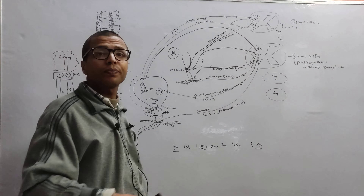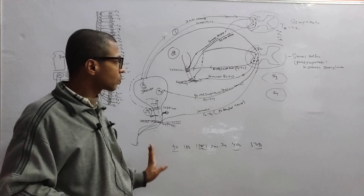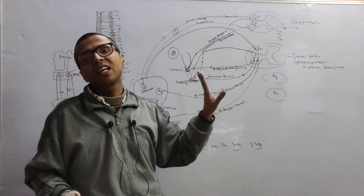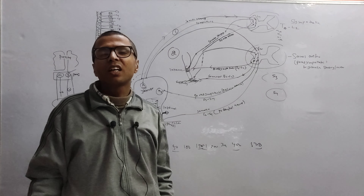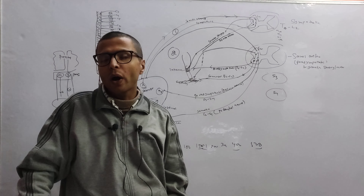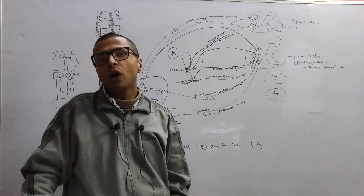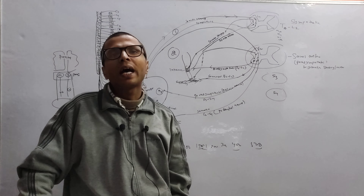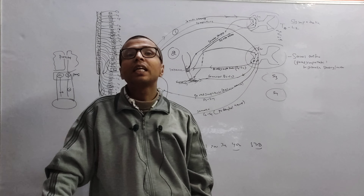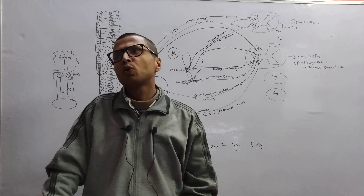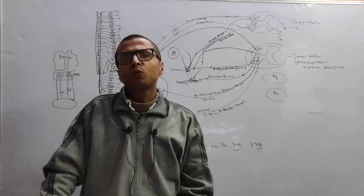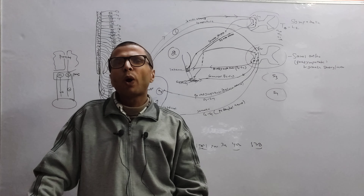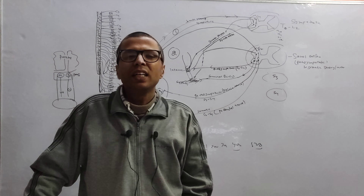The pudendal nerve fires and the external sphincter contracts, holding urine until the person reaches the bathroom. As soon as they sit on the toilet seat, the stimulatory signals to the pudendal nerve are inhibited, the external sphincter relaxes, and voiding occurs. It is the frontal cortex that told the pudendal nerve to fire initially and then told it to stop firing once the person reached the toilet.